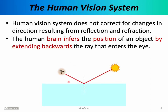For example, imagine that you're looking at a pool of water. The sun is high up in the sky, and a ray of light emanating from the sun reflects from the swimming pool and ends up in your eye. So now you see a bright object. However, you do not see the bright object high up in the sky — what you see is a bright object actually inside the swimming pool. Your vision system simply extends the ray that entered the eye backwards and assumes that there must be a bright object underneath the water level.